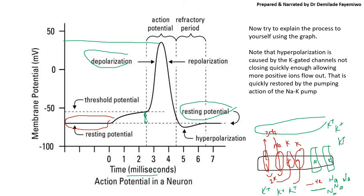Hyperpolarization is something students often miss. It occurs because the potassium-gated channels don't close quickly enough, causing more positive ions to flow out than necessary. This is usually restored by the sodium-potassium pump as it brings in potassium and pumps out sodium.